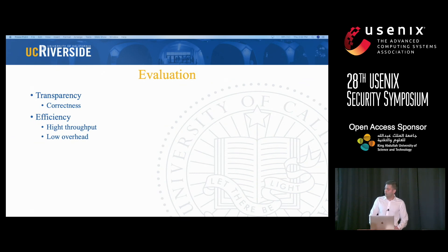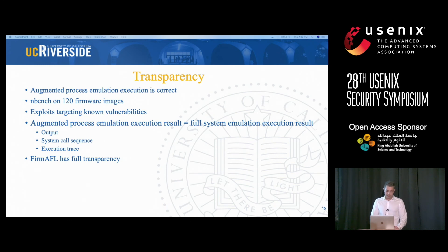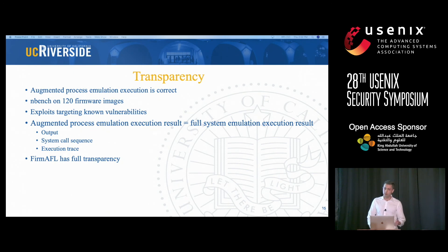We evaluated FirmAFL with the goal of assessing transparency and efficiency. For transparency, we want to make sure augmented process emulation gives correct execution. We ran NBench and 120 firmware images, and also ran exploits targeting known vulnerabilities. The result was that the execution result of augmented process emulation is the same as full system emulation — the outputs were the same, the system call sequence was the same, and the execution trace was also the same. So FirmAFL has full transparency.